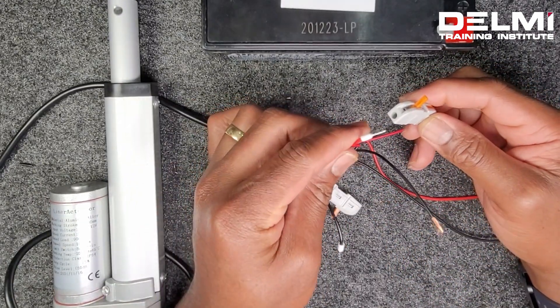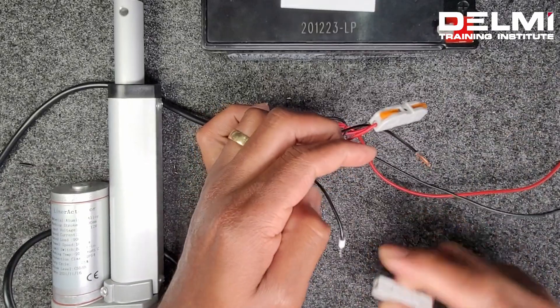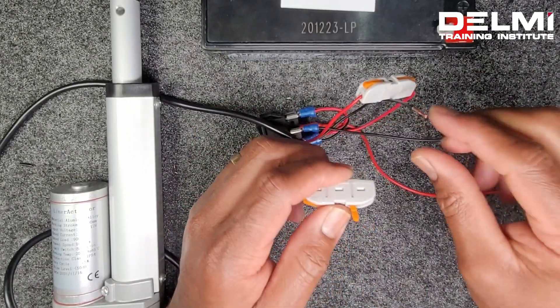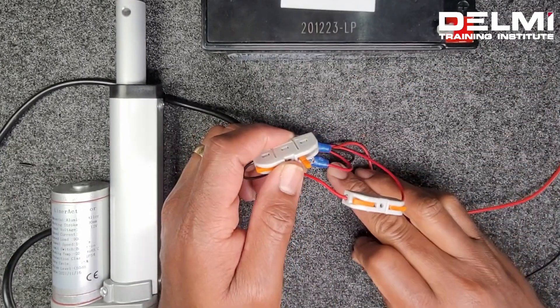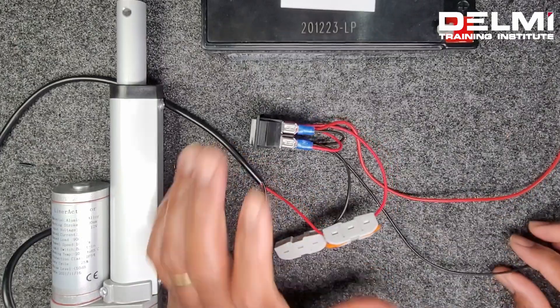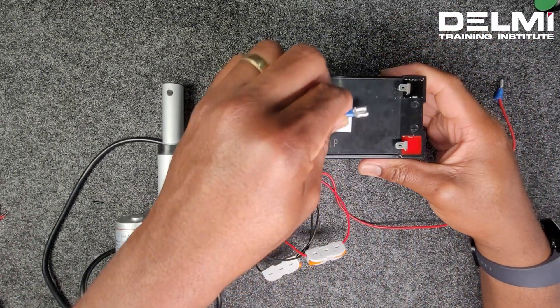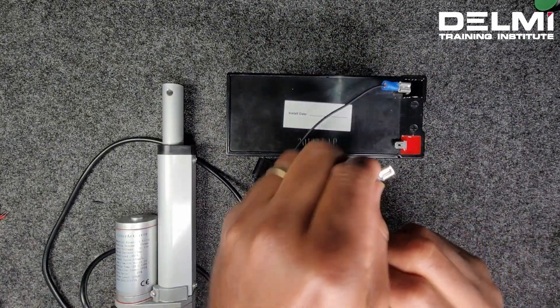And I take the positive of my actuator. Take the negative of my actuator and I take the negative from the load. Finally, connect the negative to your battery source and the positive terminal to your battery source.